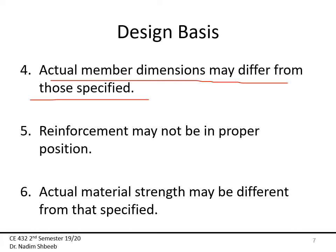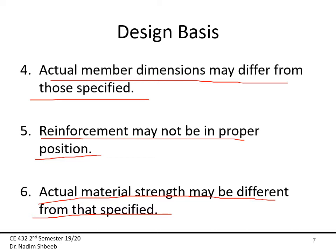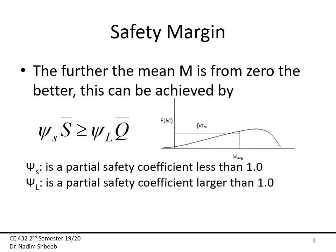Actual member dimensions may differ from those specified — anyone who has been on construction sites can attest that you tell them 50 by 60 centimeters and usually you don't get exactly that. Reinforcement may not be in the proper position. Actual strength may differ from that specified depending on how you are controlling workers at the construction site. All these factors lead to needing a margin of safety.